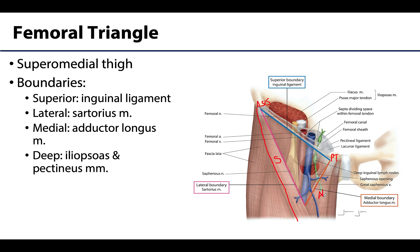The adductor longus is the medial boundary — one of the muscles of the medial or adductor compartment. The floor of the femoral triangle rests on two deeper muscles of the anterior thigh: the iliopsoas, which is more laterally placed, and the pectineus, which is more medially placed. The pectineus is not quite as visible here because it's being blocked by the contents of the femoral triangle.